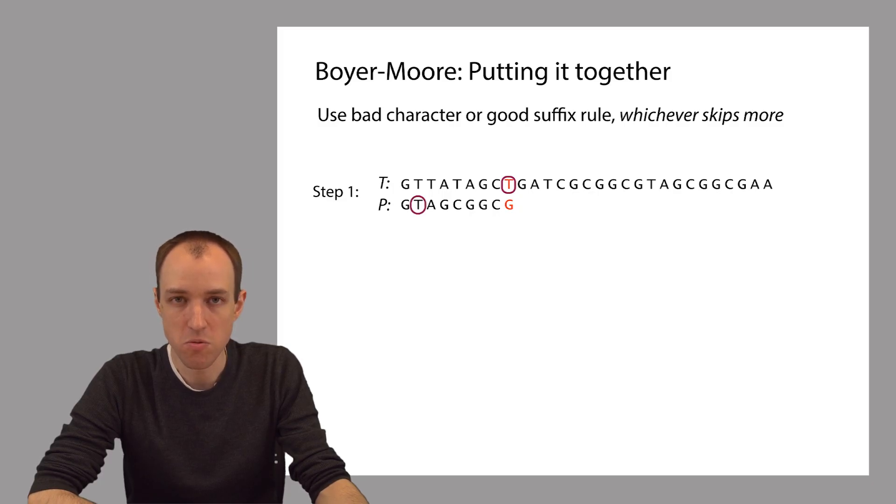Since no character is matched, the good suffix rule is not applicable here. There's no matching characters, so we can't use the good suffix rule. We have to use the bad character rule. So what does the bad character rule say? It says that we should shift until this highlighted T here is underneath this T here.